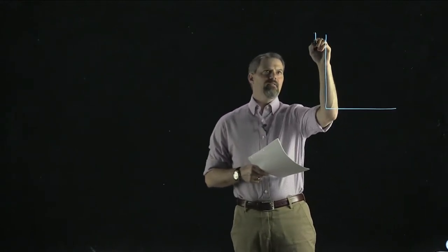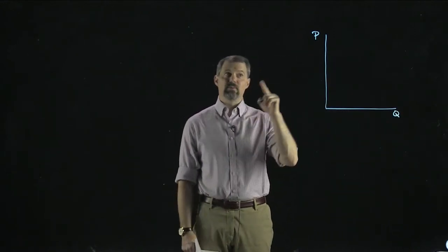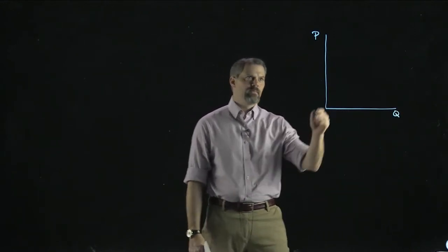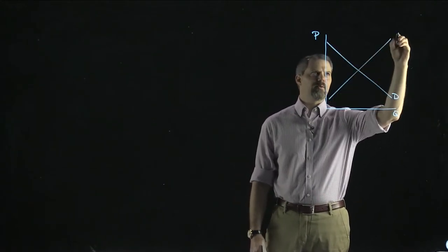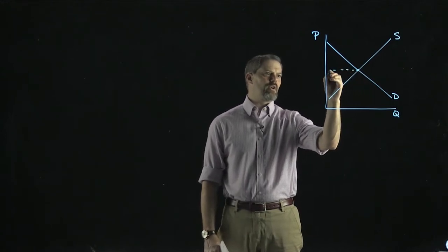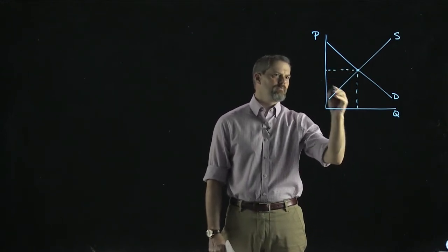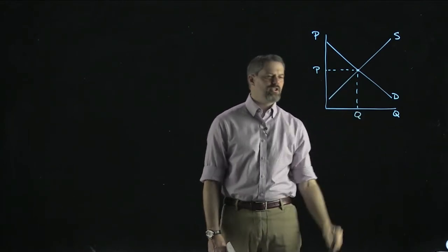Let's start by quickly reviewing what we would do in a principles class. In a principles class, we would have our inverse demand and our inverse supply curves, because we would have P on the vertical axis. Our demand curve would be downward sloping, our supply curve would be upward sloping, and then we'd simply identify where the two cross each other — let's call that P and Q.